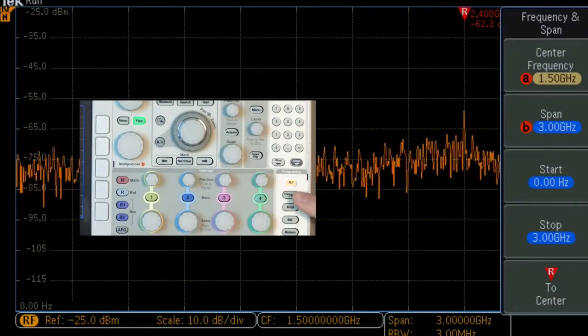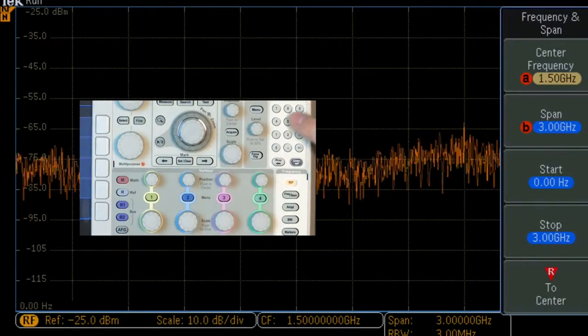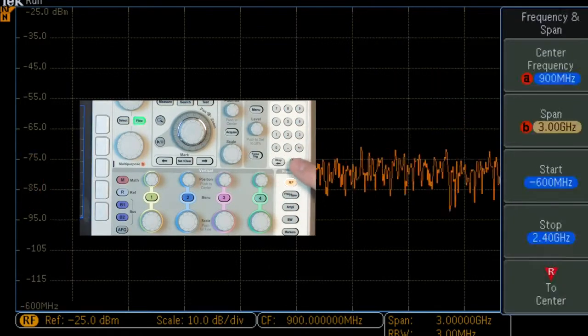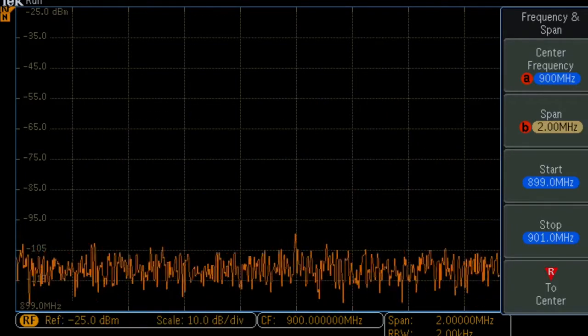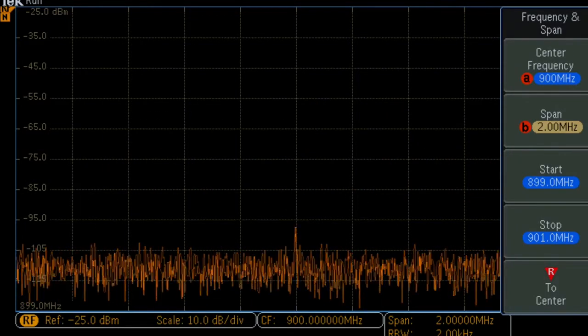Switching to the integrated spectrum analyzer, we set the center frequency to 900 megahertz and the span to 2 megahertz and use a near field probe to capture the radiated signals.